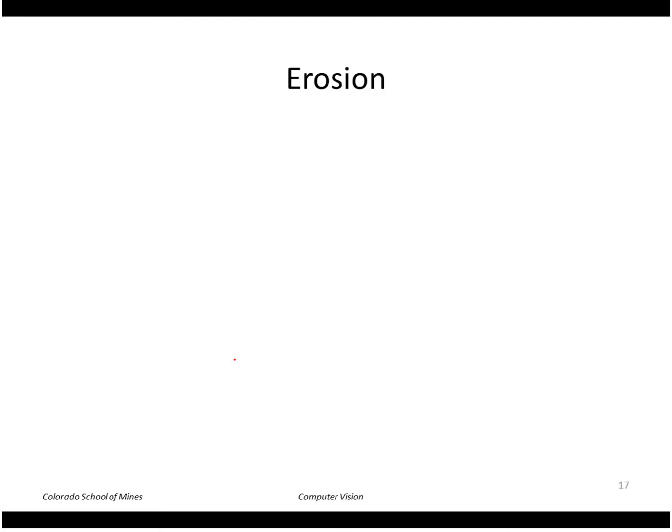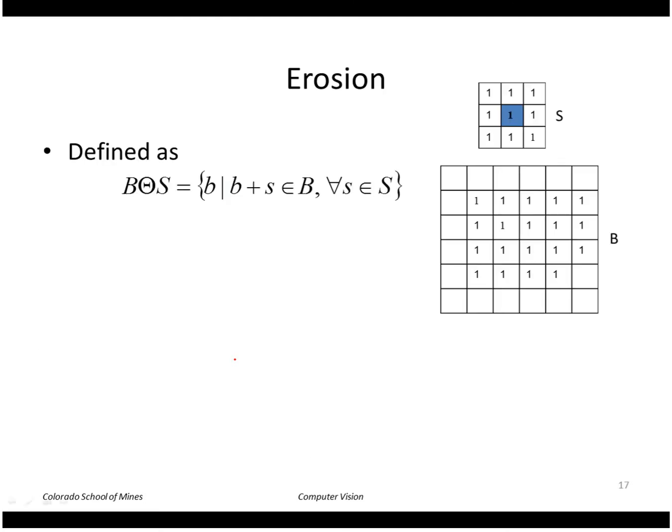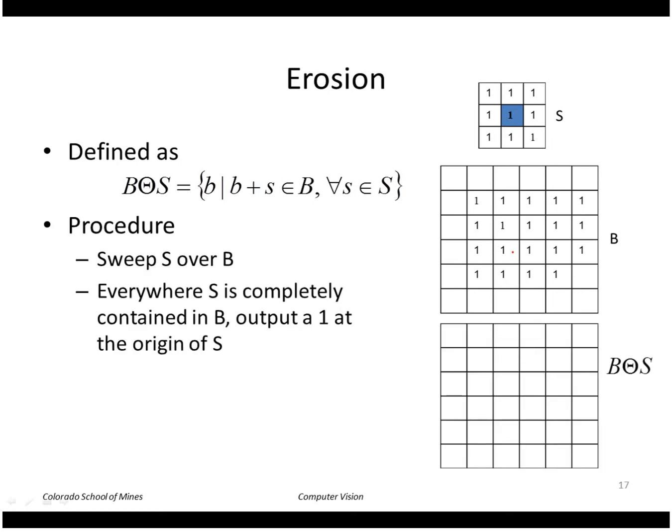So the opposite of dilation is erosion. Erosion is defined as all the points where the structuring element fits completely inside the binary image.